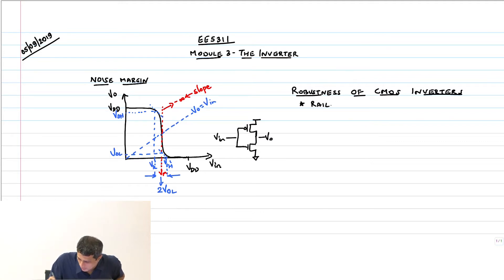Rail to rail voltage swing, which means logic 0 is ground, logic 1 is VDD. But for that small leakage current which is really negligible, this is definitely true. When the input is 0, output is VDD; when the input is VDD, output is 0.